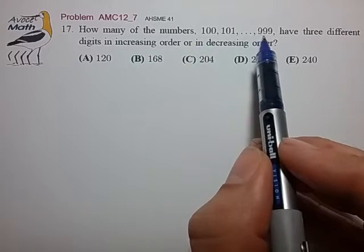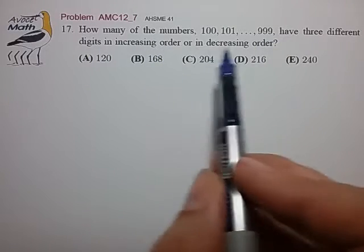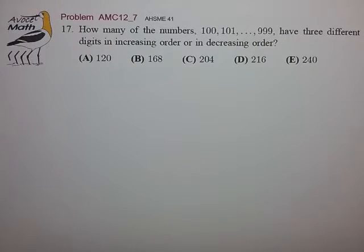How many of the numbers 100 through 999 have three different digits in increasing order or decreasing order? So essentially the total number of three-digit integers that have digits in either increasing or decreasing order.